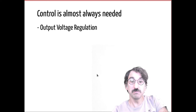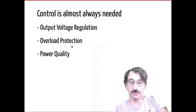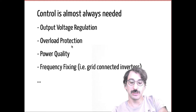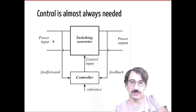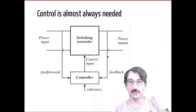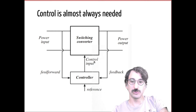Control is almost always needed — either you want to keep the output voltage constant, protect the load from overloads, maintain power quality, or, if you are sending power to the grid from a photovoltaic system, you need to fix the output frequency to match the grid. You need a controller that takes feedback, a reference voltage or current, and possibly a feed-forward controller, and sends signals to your converter.